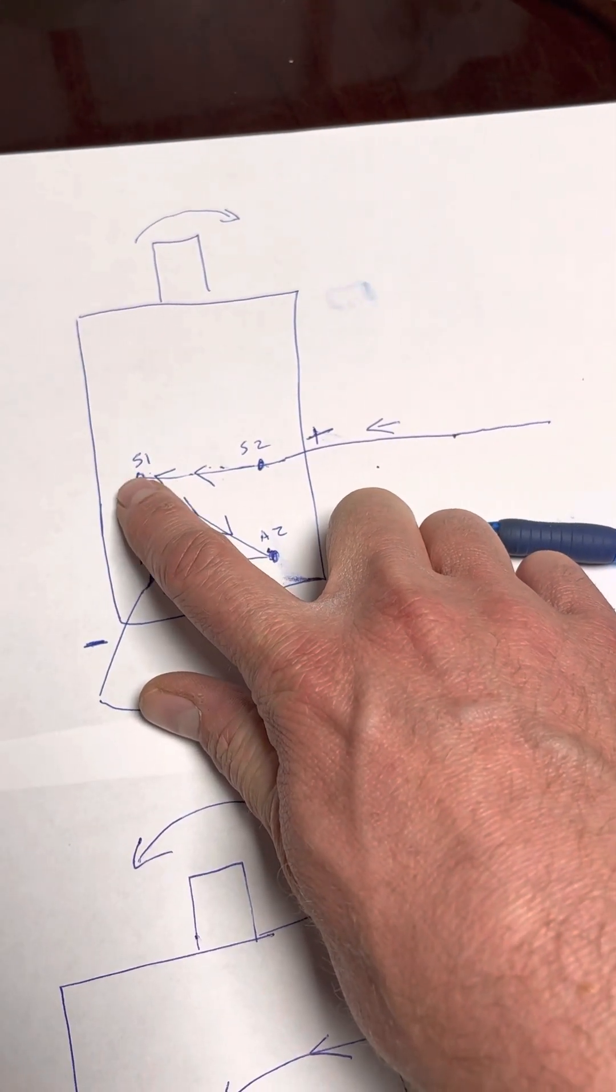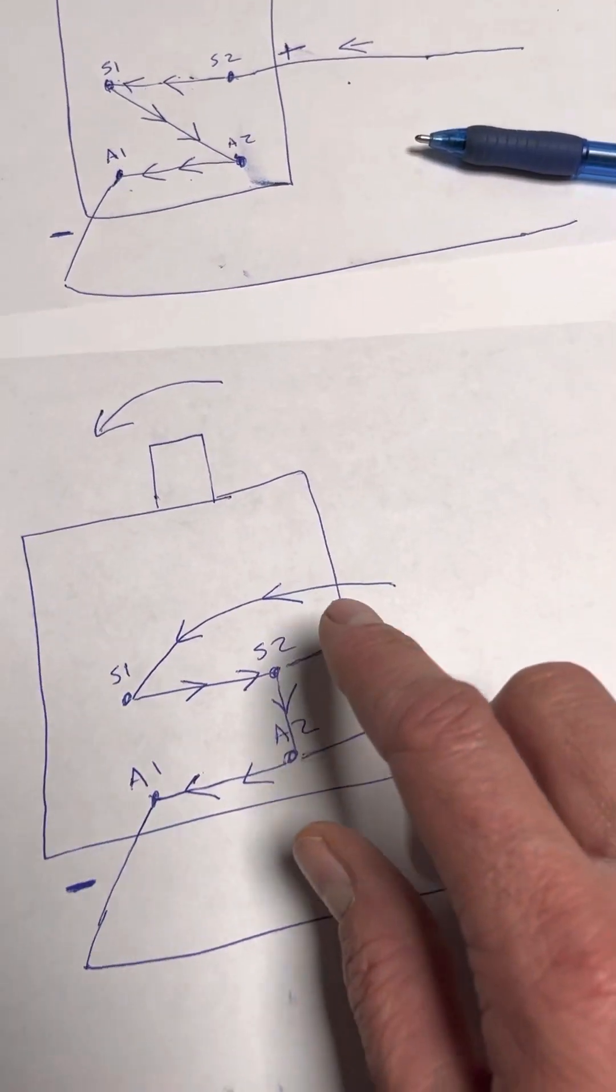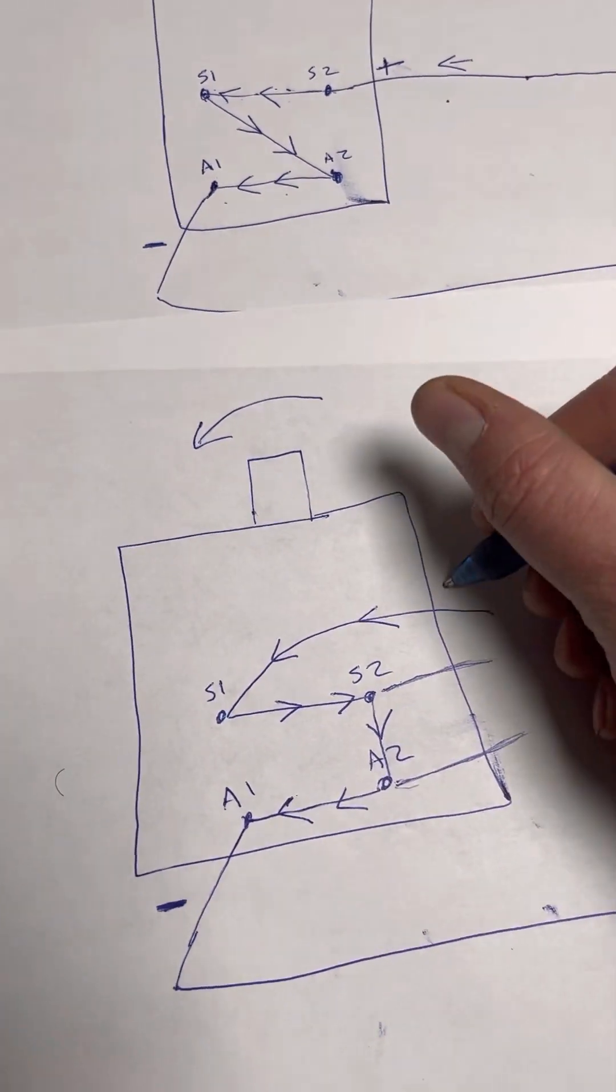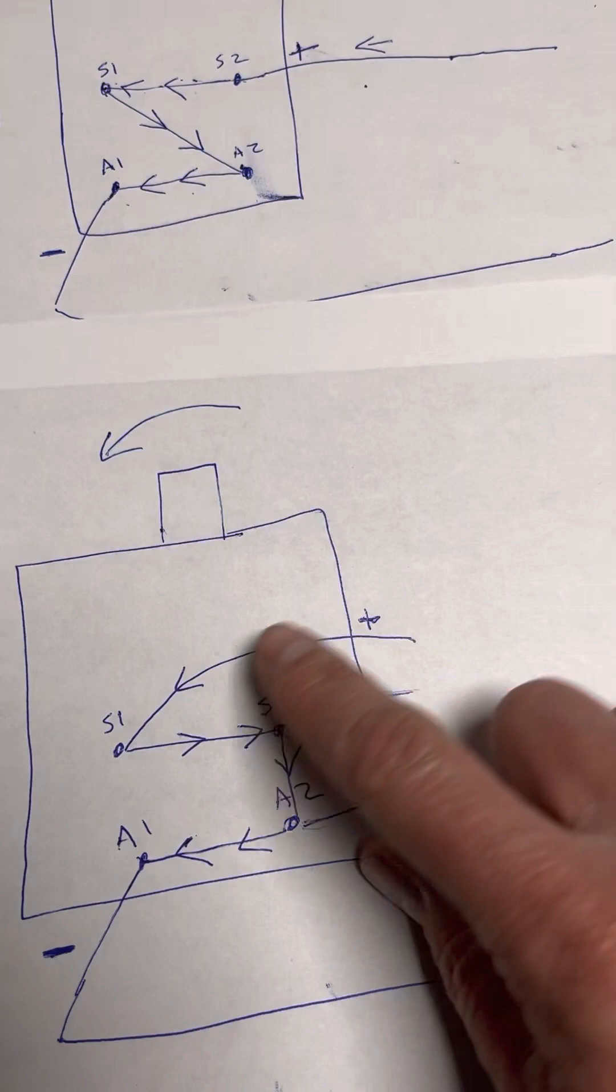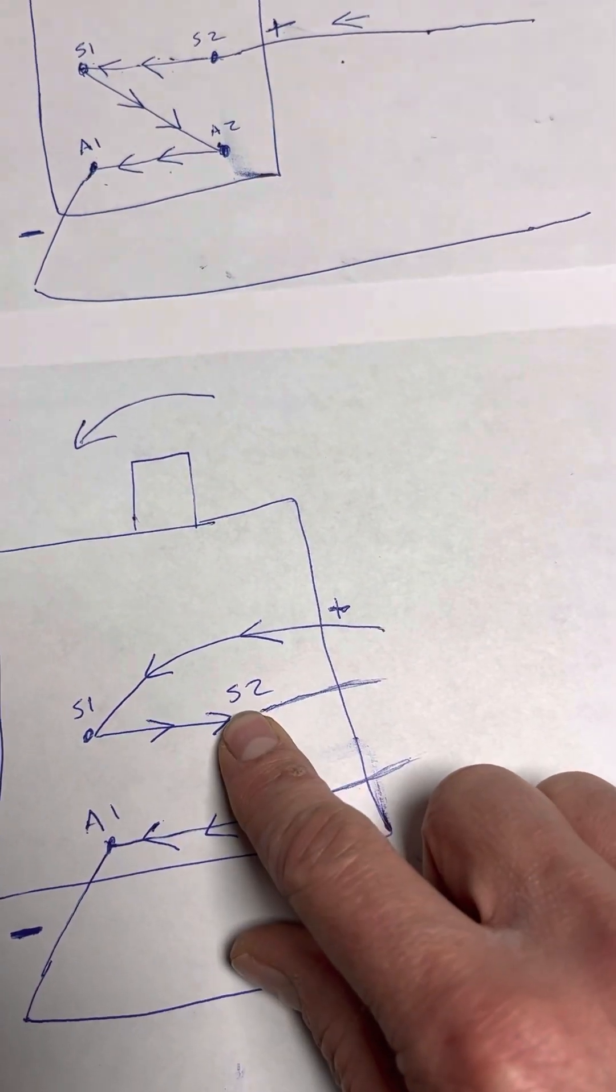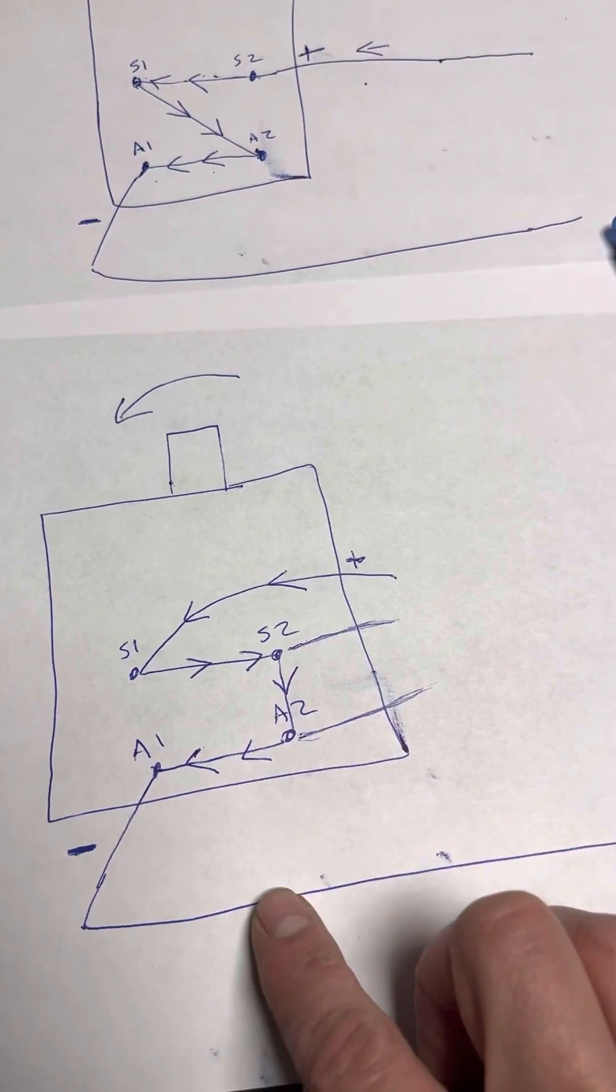And then it goes, the current in this stator winding goes this way, like we got drawn here. So we hook our main positive, I'll draw it here, to S1. And it causes the current in the stator to go this way, so that it can come over to the armature and then come out.